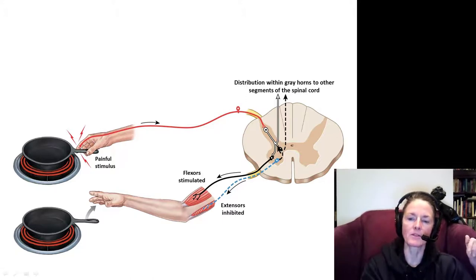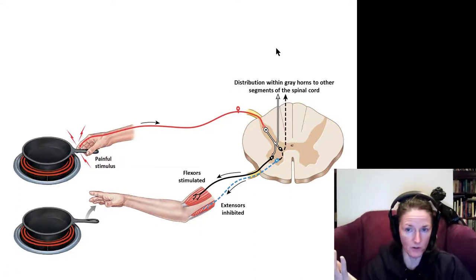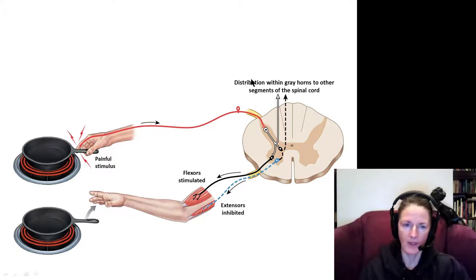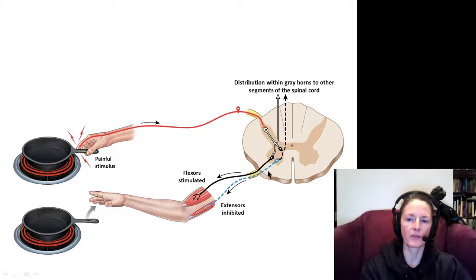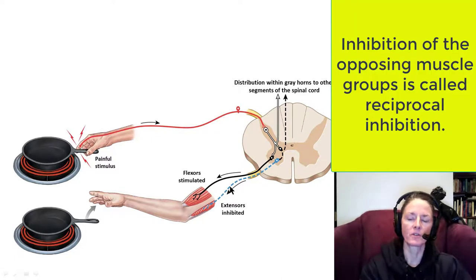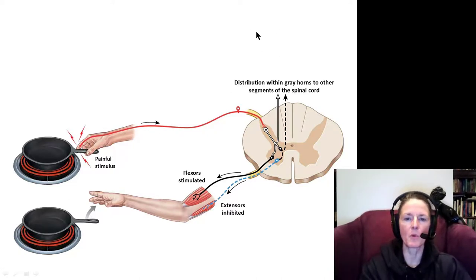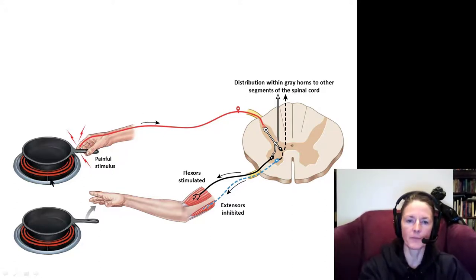At the same time, the interneuron sends information ascending through the spinal cord to the brain, eventually reaching conscious awareness. This tells you there's a hot stove — maybe you need to turn it off. So there are several levels to this reflex: first, the withdrawal itself; second, inhibition of the extensors; and third, information that takes a bit longer to be processed, making you consciously aware of what happened after you've already withdrawn your hand.